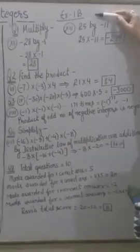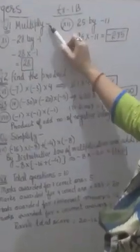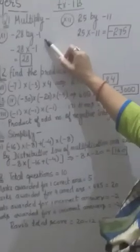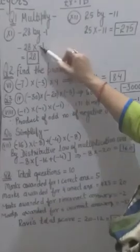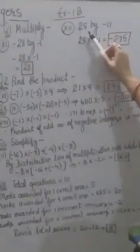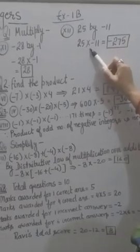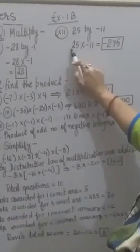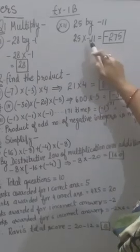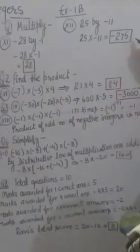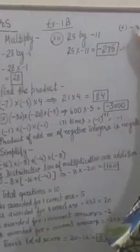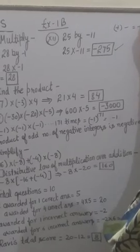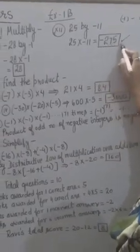Now we will solve a few examples from Exercise 1B of our book. Question 1: multiply −28 by −1. −28 × −1 = 28, and minus × minus = plus, so the answer is 28. Next part: 25 × (−11). The product of 25 and 11 is 275, and plus × minus gives minus, so the answer is −275.